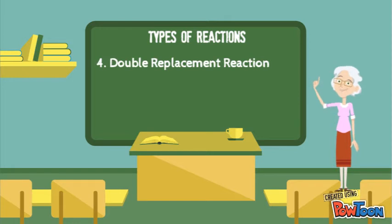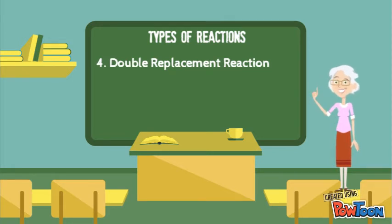The fourth type of reaction is a double replacement reaction where you have AB plus CD yields AD plus CB.